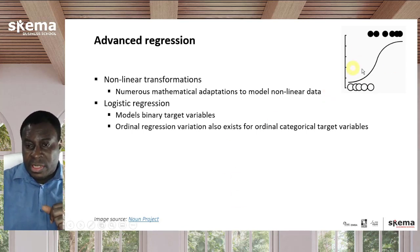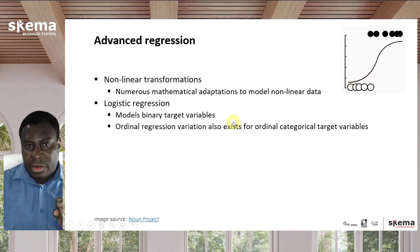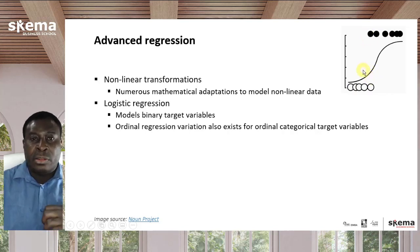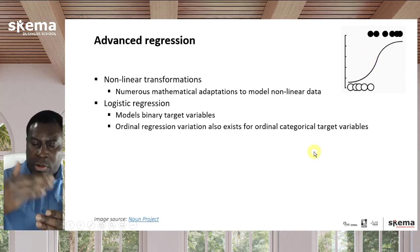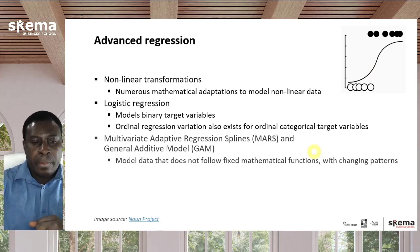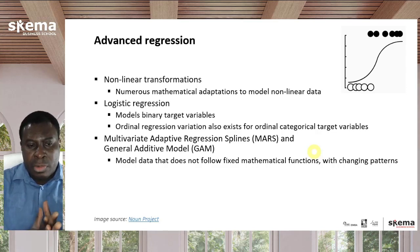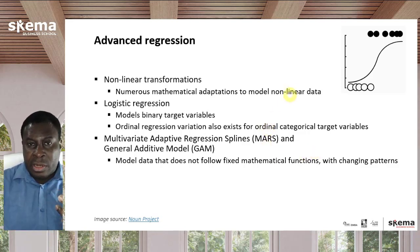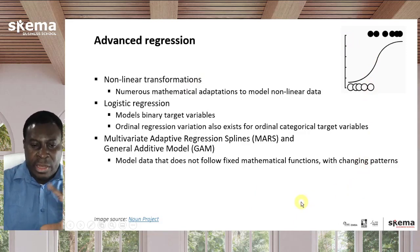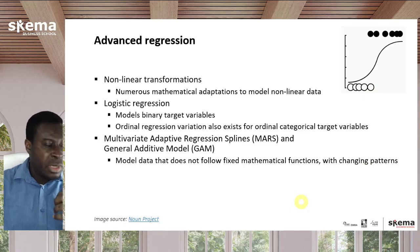Logistic regression, as shown in this graph, is a very standard alternative to linear regression that models binary target variables — values that are either 0 or 1 and nothing in between. There's also ordinal regression for various levels, not just two categories. Then there are alternatives called Multivariate Adaptive Regression Splines, or MARS, and also the General Additive Model, which fits very unusual distributions of data that go up for a while, then go down — they can fit things that don't match any given mathematical function and have changing patterns, so they can be quite flexible.